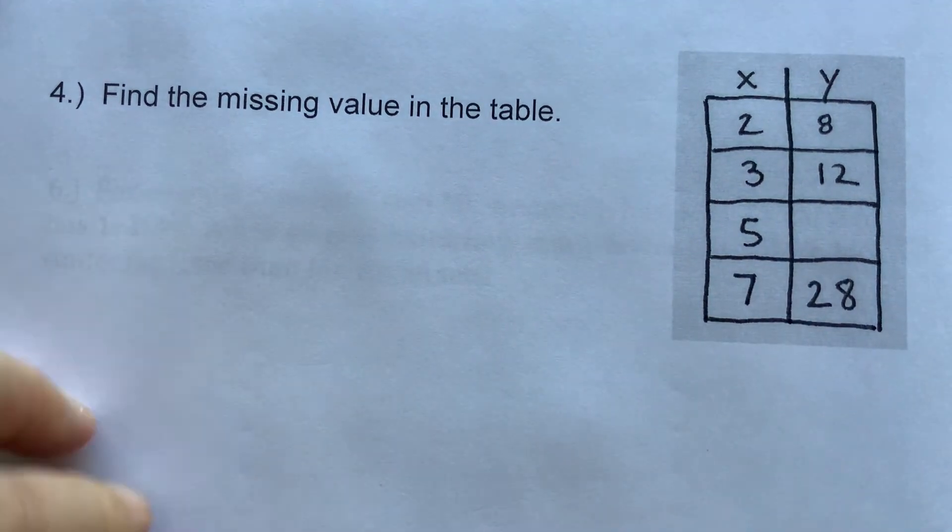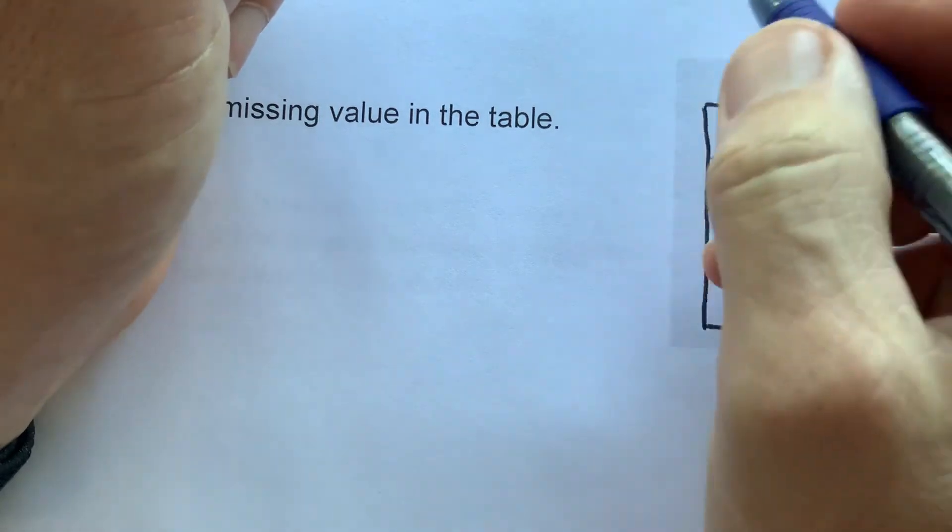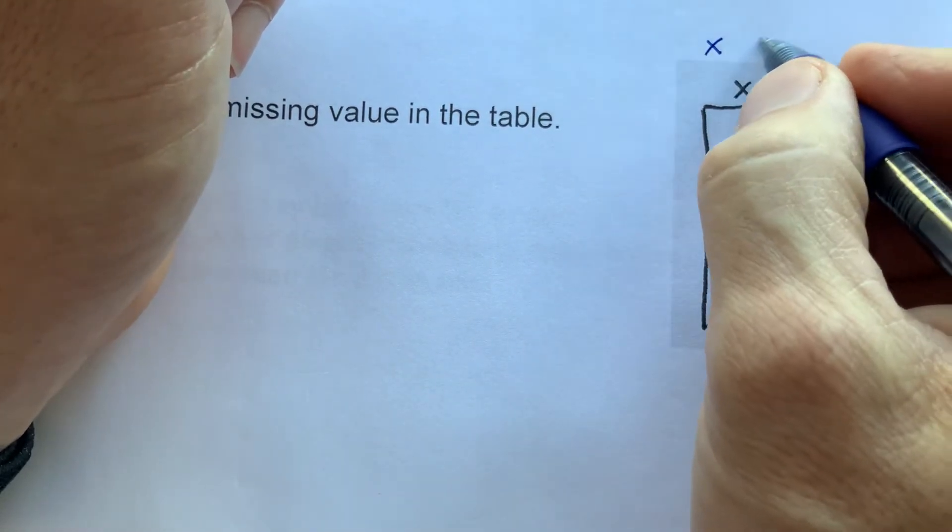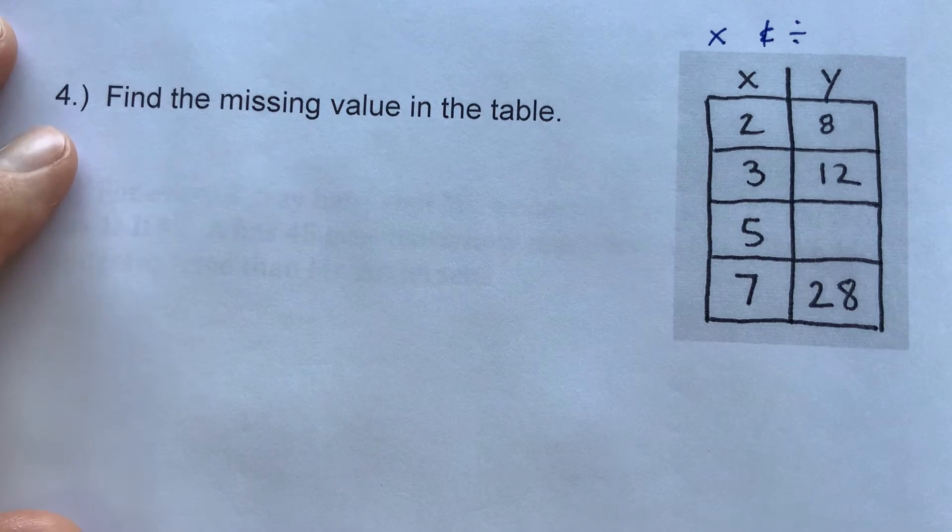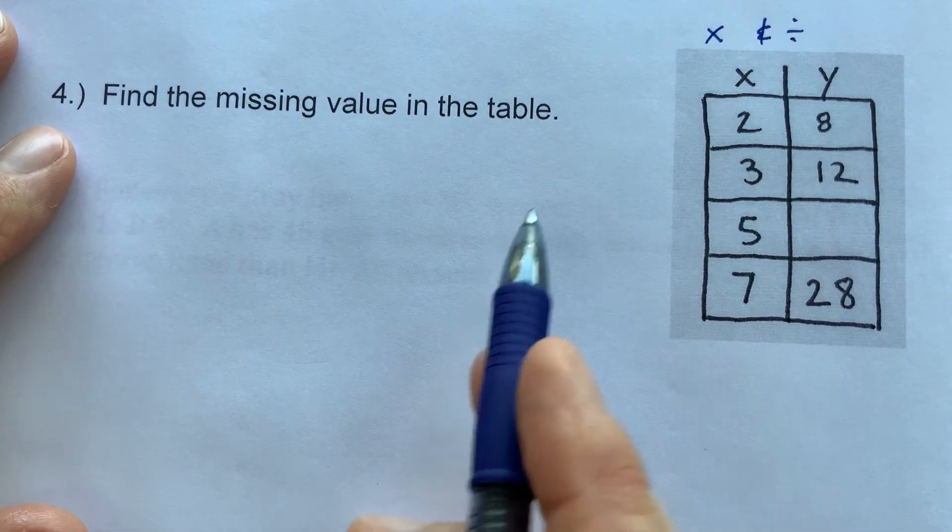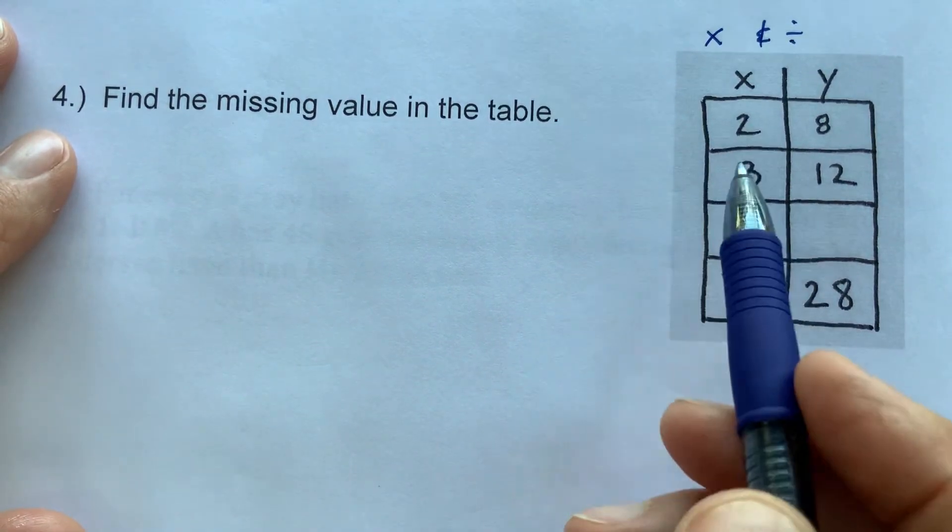Now, sometimes we can look for patterns to see things. 2 turns into 3. Remember, we can only use multiply and divide. We can't use add or subtract for these. It won't work. Multiply and divide. And see how we can't turn a 2 into a 3?